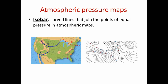Atmospheric pressure maps are used to determine the positions or areas of high and low atmospheric pressure and the movement of air. Isobars are curved lines that join points of equal pressure in atmospheric maps. A region of low atmospheric pressure is assigned with the letter L, while a region of high atmospheric pressure is assigned with the letter H. Air moves from regions of high atmospheric pressure to regions of low atmospheric pressure.